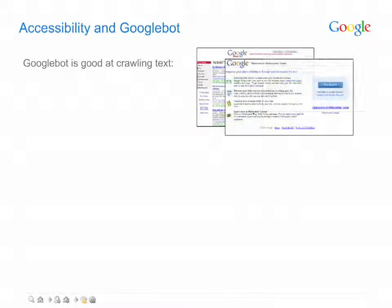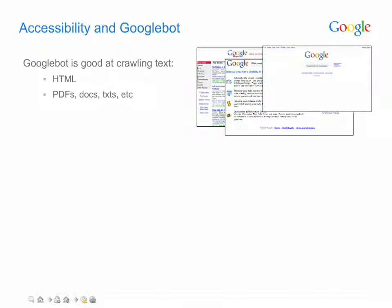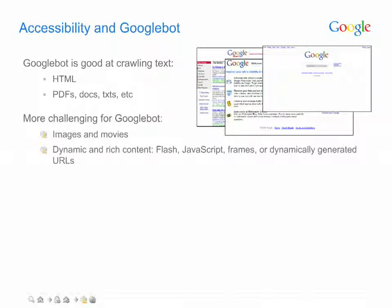HTML files and other document types comprised mostly of text are pretty straightforward for Googlebot. Music, images, and movies are harder for Googlebot to understand. So, too, are dynamic pages — those pages with frequently changing or on-the-fly generated content — potentially problematic.